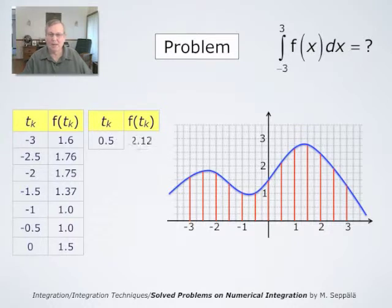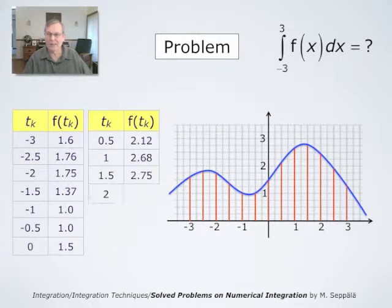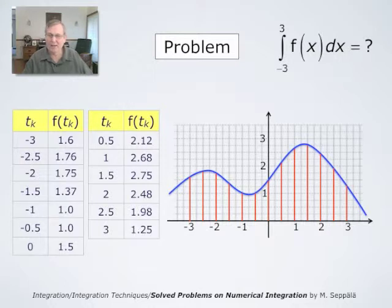If tk is 0.5, then f is about 2.12; if t is 1, f is about 2.68; if t is 1.5, f is about 2.75, and so on. So we have to read these values from this picture the best we can. Of course, this is not going to be accurate. The picture is only given up to a certain accuracy.